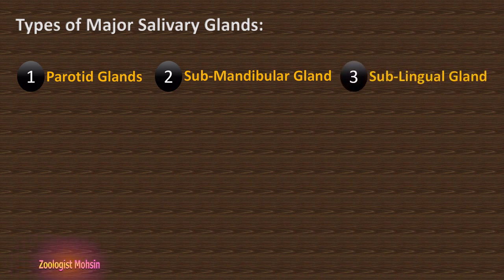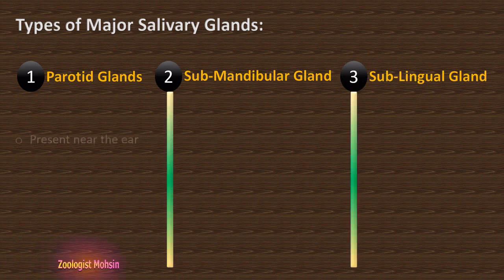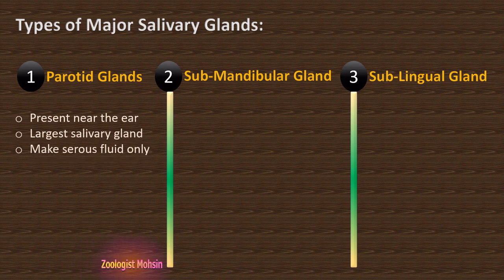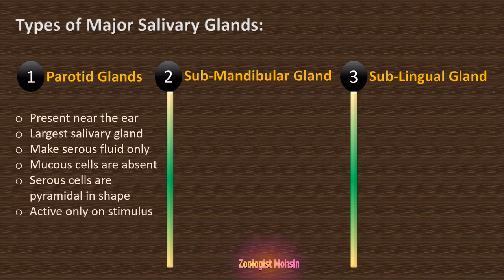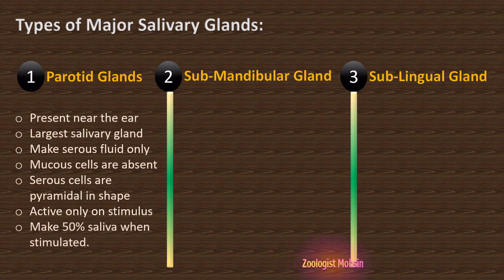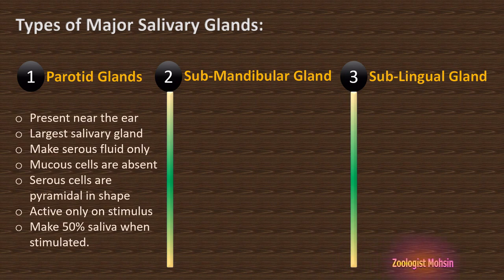Let's compare each type. The parotid gland is present near the ear and is the largest salivary gland. It makes serous fluid only — it does not make mucus, so mucus cells are absent. Serous cells are pyramidal in shape. The parotid gland is active only on stimulus, not regularly. When stimulated, it contributes 50% of total saliva — 50% of the saliva present in the mouth comes from the parotid glands upon activation by food or other stimulants.